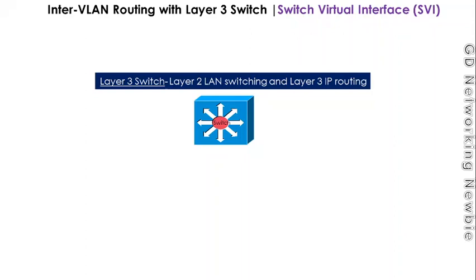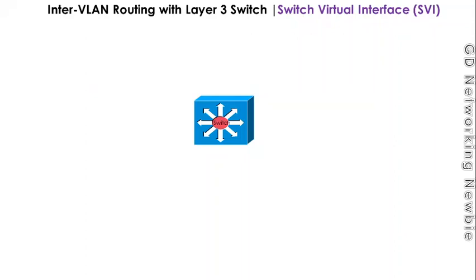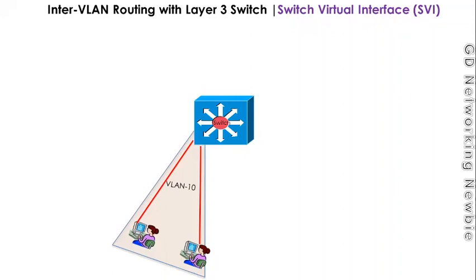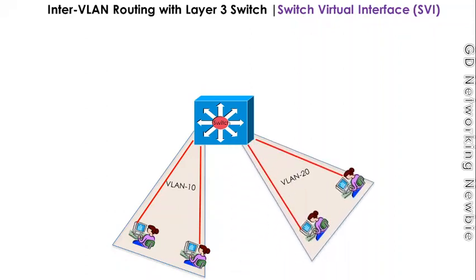Why do we use it in inter-VLAN? For example, we have this multi-layer switch, and we have created VLAN 10 and VLAN 20. Now we have two VLANs and they will be in different subnets. We want the traffic from one VLAN to cross this switch and be able to reach the other VLAN — so we want inter-VLAN routing between these two VLANs.